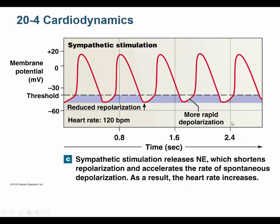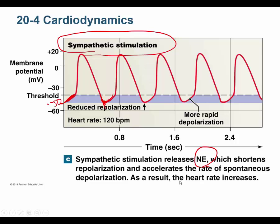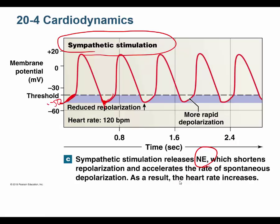The sympathetic nervous system does the opposite — it partially depolarizes the membrane, so instead of starting at negative 60, you start at negative 50. You're much closer to threshold, so firing takes less time. Repolarization also doesn't go as deep, so the cycle is faster. Norepinephrine is the neurotransmitter that accelerates the heart this way.